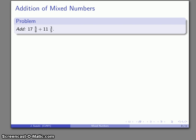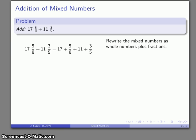So for example let's consider a typical problem. We're going to add two mixed numbers 17 5/8 to 11 3/5. So again it's very useful to rewrite these mixed numbers as whole numbers plus fractions. So this 17 5/8, I'm going to split that 17 plus 5/8, the 11 3/5, 11 plus 3/5. So I split them up into a whole number plus a fraction.